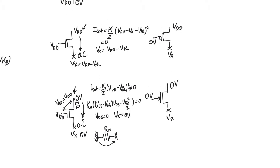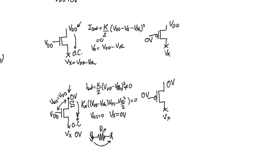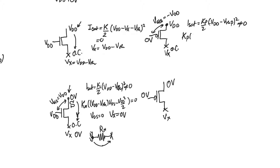Now consider the PMOS with its gate at zero volts and source at VDD — the higher potential is the source for a PMOS. VGS equals minus VDD, so it is definitely on. Assuming saturation, the current Kp/2 × (−VDD − VthP)² cannot be zero, yet there is an open circuit, so the transistor must be ohmic. The ohmic equation gives VDS = 0, so VX = VDD. The PMOS successfully passed VDD in full.